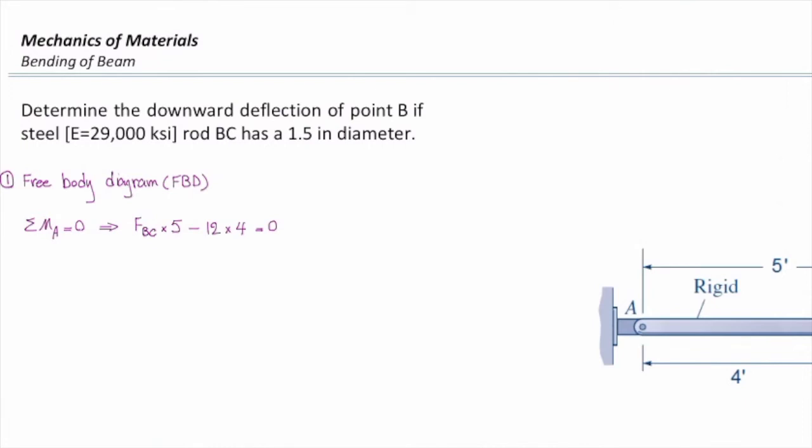So that gives me FBC times 5 feet minus 12 kips times 4 feet. So I can solve FBC. That gives me 48 over 5 kips, which is equal to 9.6 kips, which is equal to 9,600 pounds. So that is the force in this element. That is the first step.